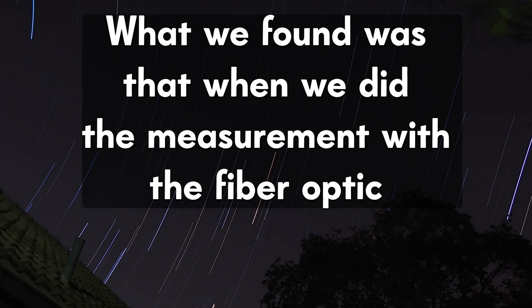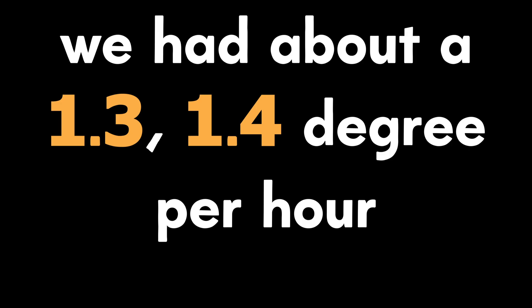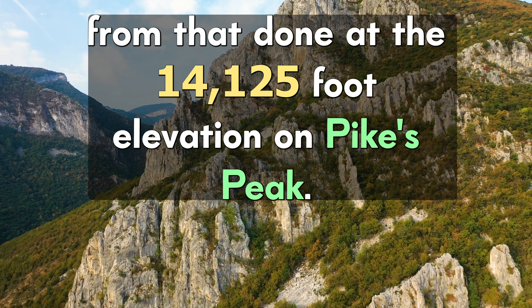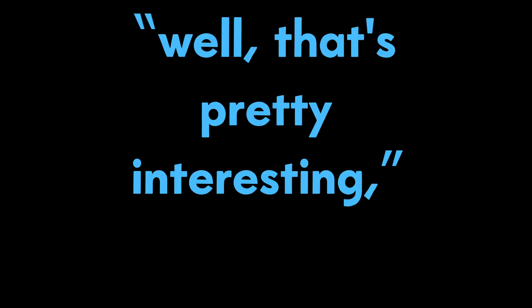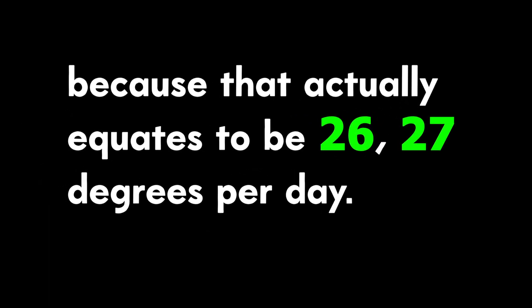Here's the problem with that. What we found was that when we did the measurement with the fiber optic gyro at the 4,000 foot elevation, we had about a 1.3, 1.4 degree per hour variance from that done at the 14,125 foot elevation on Pikes Peak. So we thought, that's pretty interesting because that actually equates to be 26, 27 degrees per day. That's a huge number.